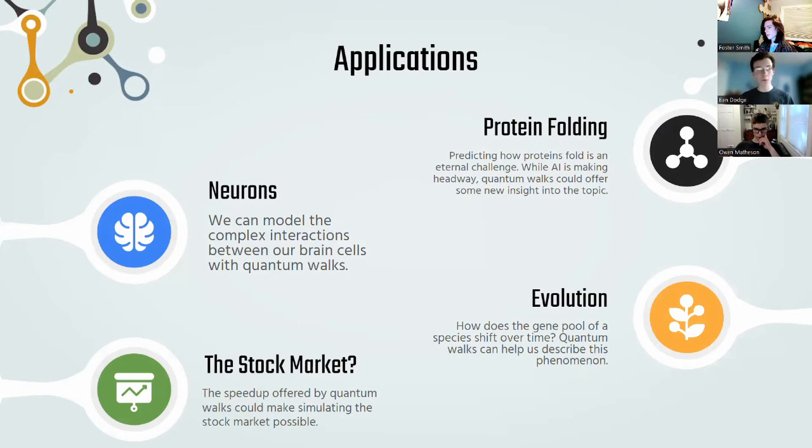First, quantum walks can simulate neurons and how they interact inside our brains. They can simulate proteins floating inside our bodies. They can even simulate population exchanges and evolution in ecosystems. If you remember from your biology class, we can simulate Darwin's finches using quantum walks. Finally, quantum walks can also potentially simulate movements on the stock market, netting someone who figures out this algorithm quite a bit of cash.